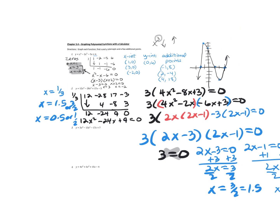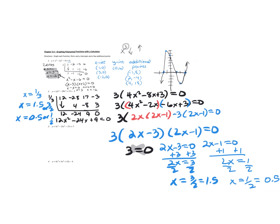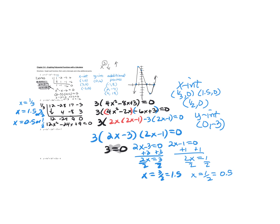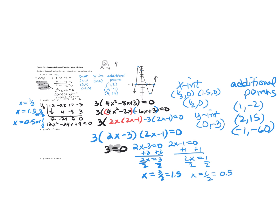These rational zeros are also x-intercepts: one third comma zero, one and a half comma zero, and one half comma zero. The y-intercept is that constant, so it's zero comma negative three. The additional points I'll graph — these can be different from the ones you choose — are one comma negative two, two comma fifteen, and negative one comma negative sixty. The negative one comma negative sixty just shows the general direction the graph is heading.